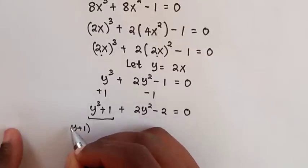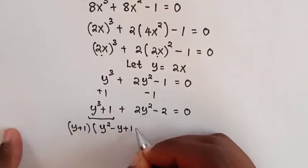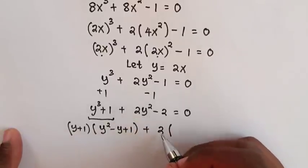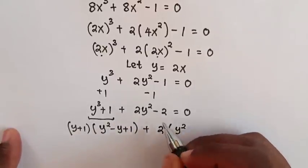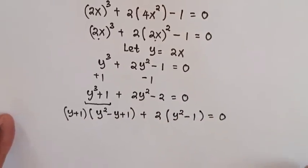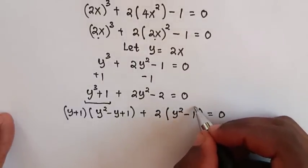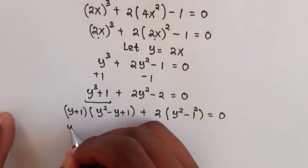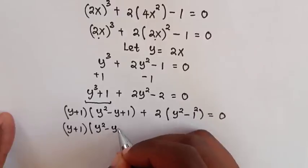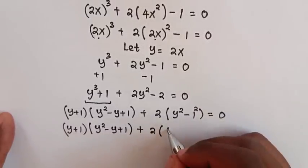Then from here y cubed plus 1 is the same as (y plus 1)(y squared minus y plus 1), plus here 2. So 2 is common — take 2 out of the bracket. This divided by 2 will be y squared, and negative 2 divided by 2 is negative 1, bracket is equal to 0. Then from here y squared minus 1 is the same as (y plus 1)(y minus 1).